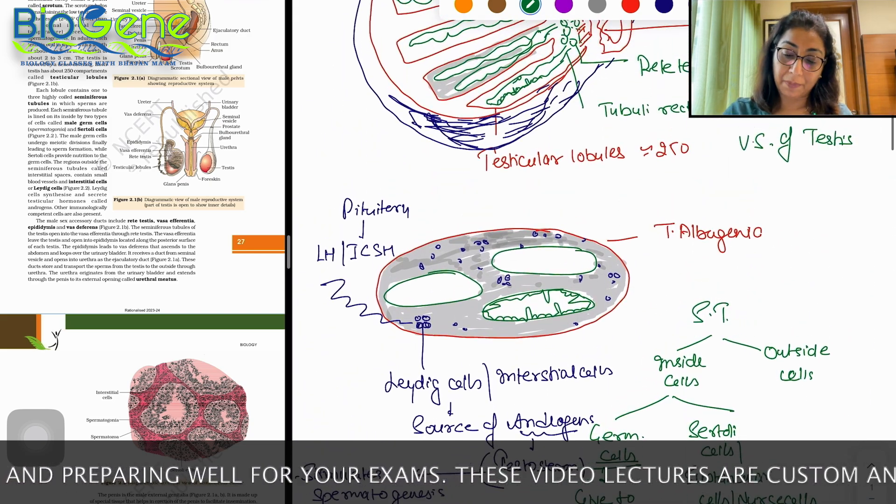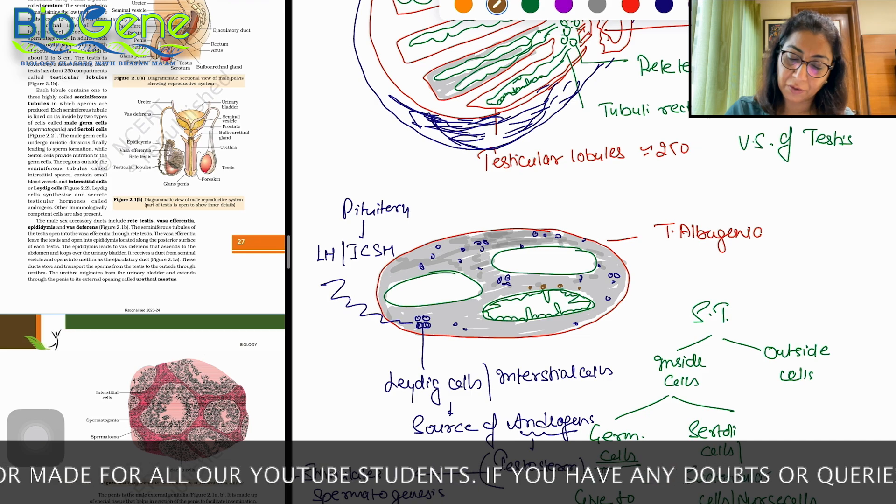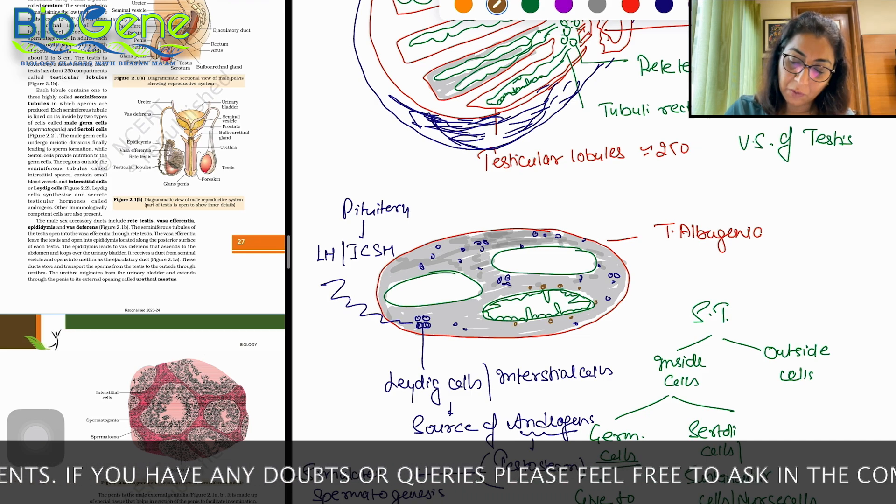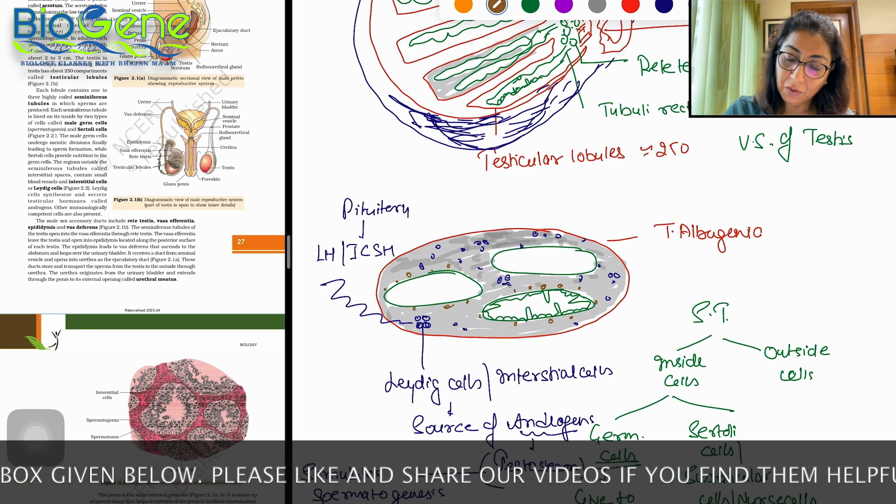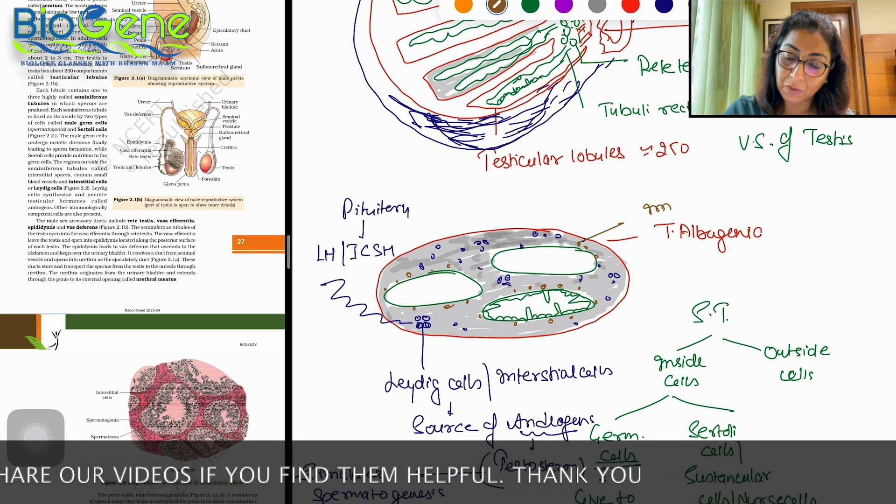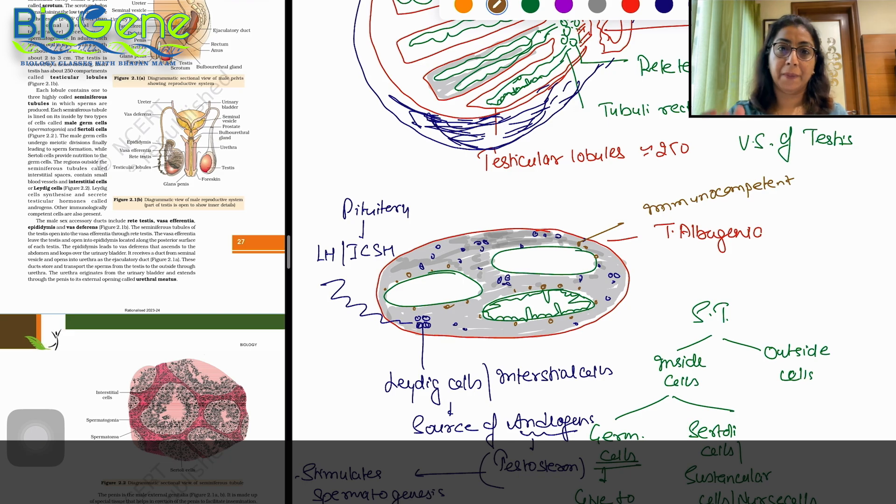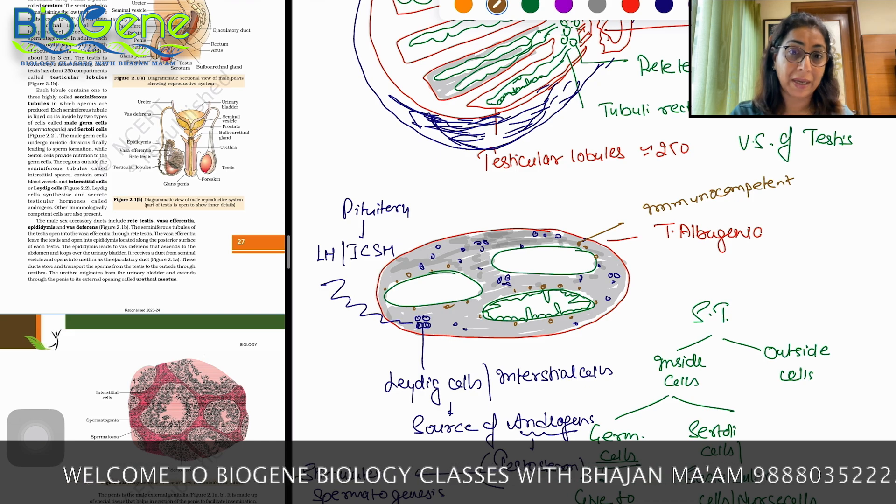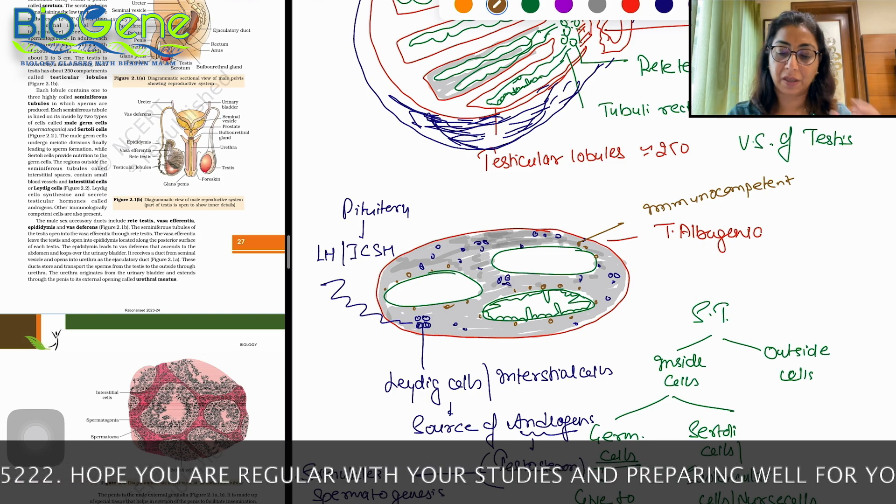Above all, you will see one other cell which are normally around. These are immunocompetent cells. NCERT doesn't talk about their role but their role is just as the name indicates, immunity. These are basically like macrophages, like phagocytic cells. So these cells play a role in immune system plus sperm protection also.